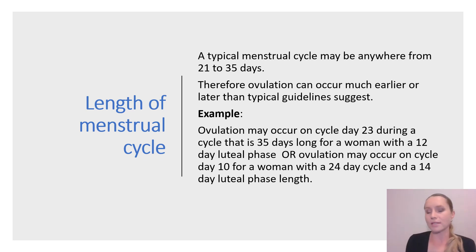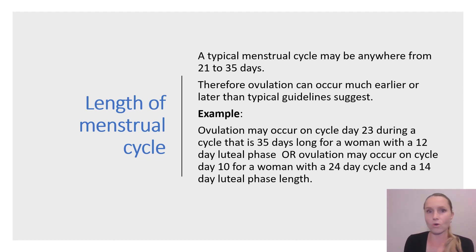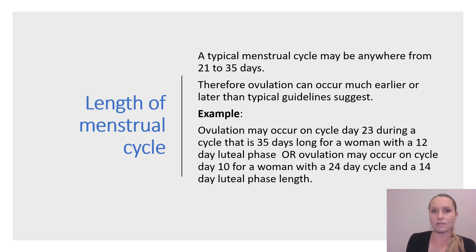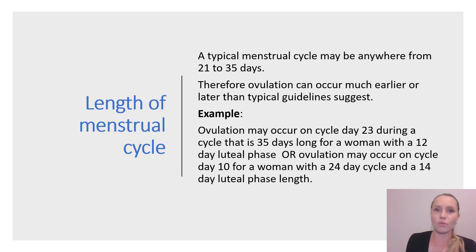A typical menstrual cycle may be anywhere from 21 to 35 days. Some women have cycles that are shorter or longer than this. Therefore, ovulation can occur much earlier or later than typical guidelines suggest. For example, ovulation may occur on cycle day 23 during a cycle that is 35 days long for a woman with a 12-day luteal phase. Another example: ovulation may occur on cycle day 10 for a woman with a shorter 24-day cycle and a 14-day luteal phase. You can see that this variation among women and from cycle to cycle means there is really no simple one-size-fits-all approach, and the only way to know when you are likely to ovulate is by observing your fertility signs and charting them.